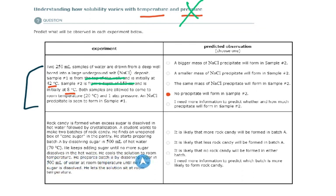He prepares batch B by dissolving sugar in 500 mils of water, the exact same amount, same amount of water, same solvent, same volume. But this time, it's at room temperature. So he doesn't heat it to 70 degrees Celsius. He dissolves sugar in it while it's at room temperature until no more sugar is dissolved. He lets the solution sit at room temperature. What's our predicted observation?